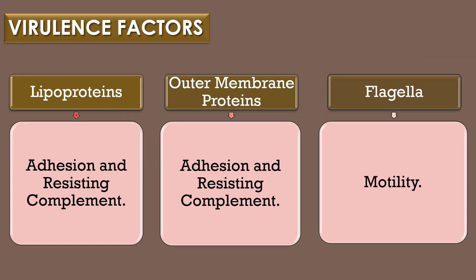Virulence factors of Leptospira introgons: The ability of a microorganism to cause an infection is called virulence. The term virulence was first coined by the scientist Louis Pasteur, and virulence factors are the factors responsible for causing an infection in human beings. Leptospira introgons has three virulence factors: the first is lipoproteins, the second is outer membrane proteins, and the third is flagella. Both lipoproteins and outer membrane proteins support adhesion and resisting complement.